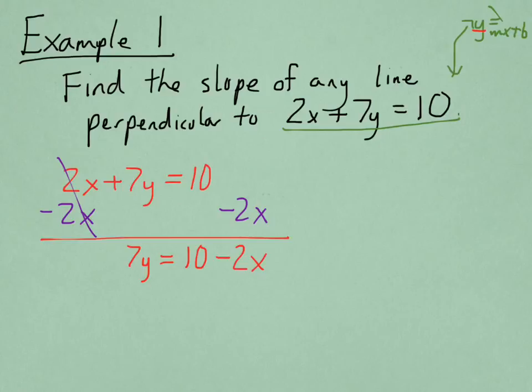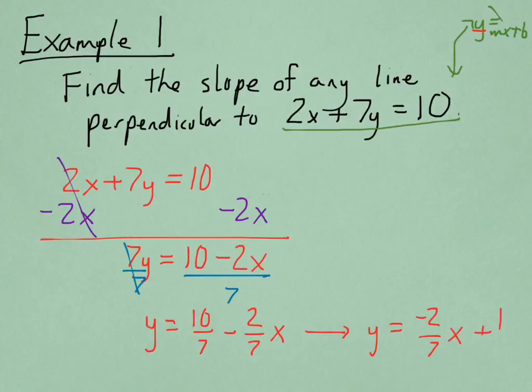Then, finally, to solve for y, I would need to divide both sides of the equation by 7, the coefficient in front of y. This would make the 7s cancel here, and we would be left with 10 over 7 minus 2 over 7x. Which I could also rewrite as putting the x term first, negative 2 over 7x plus 10 over 7. So, it looks like y equals mx plus b.